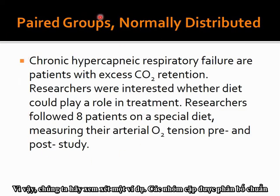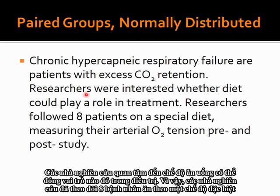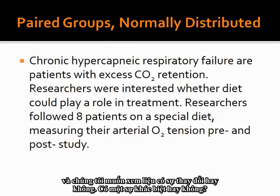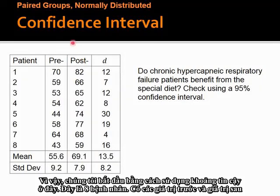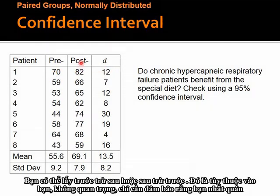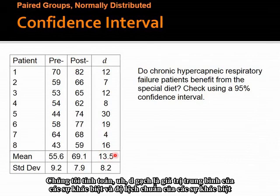Let's look at an example — paired groups, normally distributed. Chronic hypercapnic respiratory failure patients have excess carbon dioxide retention. Researchers were interested whether diet could play a role in treatment. Researchers followed eight patients on a special diet and measured their arterial oxygen tension pre and post study. We calculate post minus pre differences: 12, 7, 12, and so on. We get D-bar, the mean of the differences, and the standard deviation of the differences.